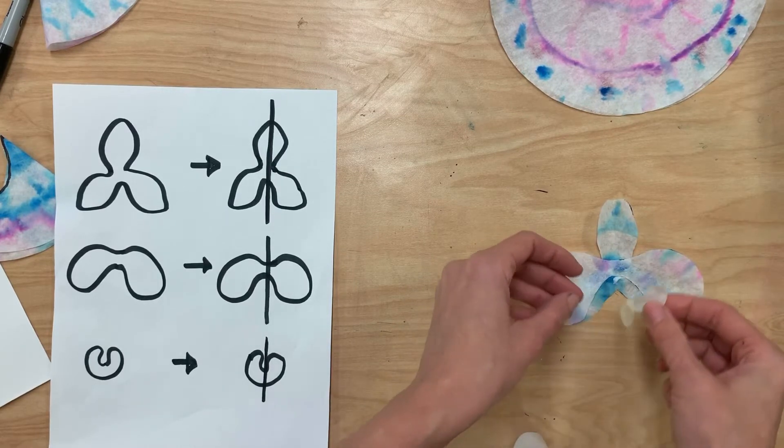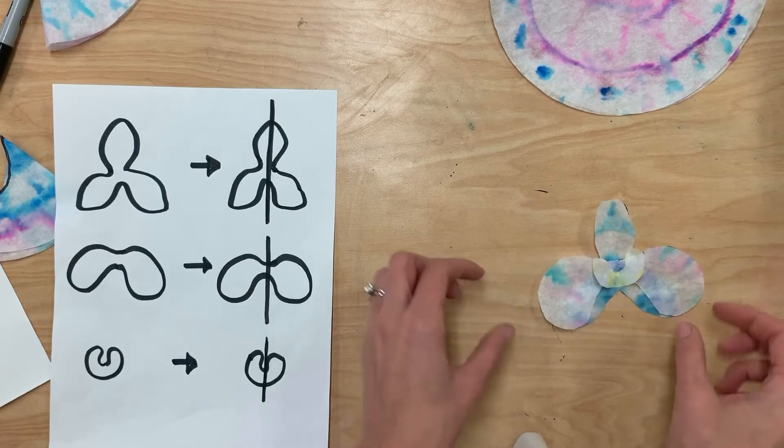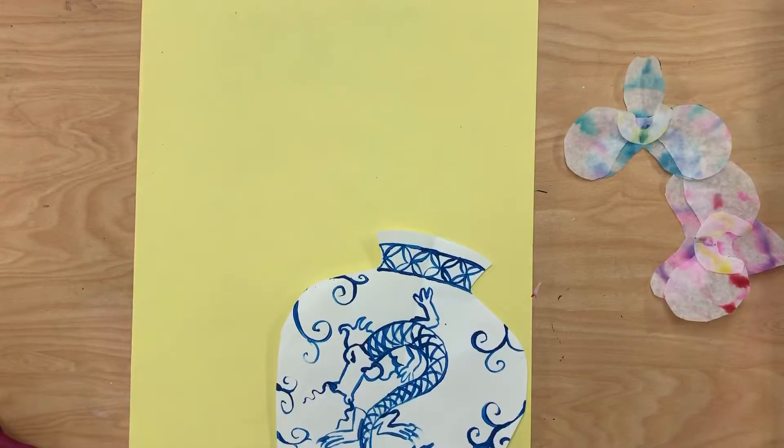really small. You don't want too much because then it'll go through and your orchid will stick to everything. And we can stick that in the middle.